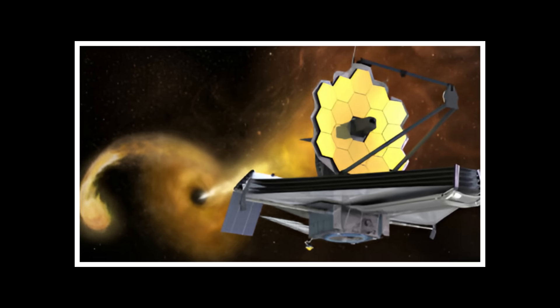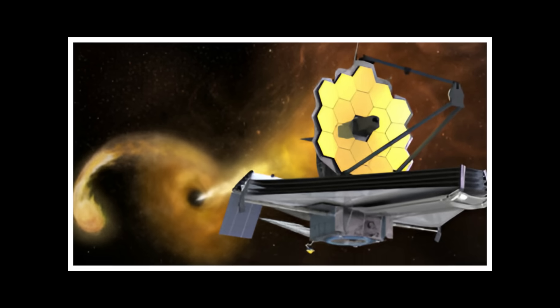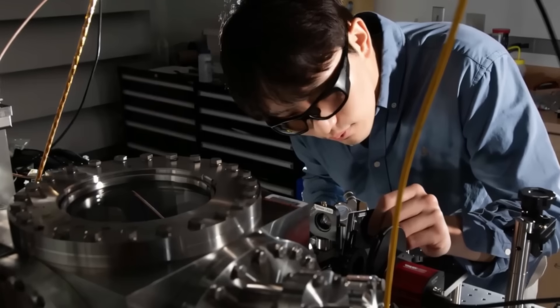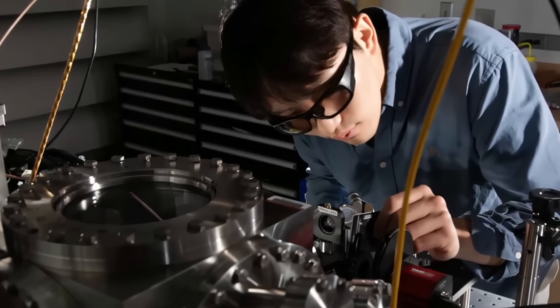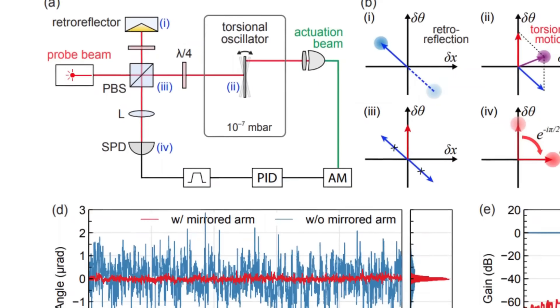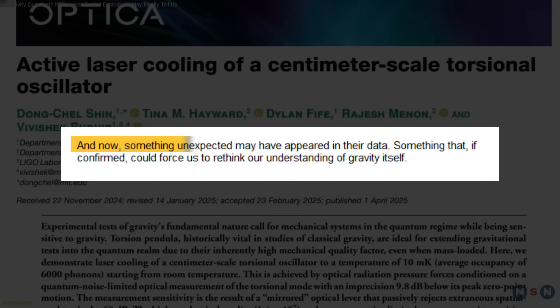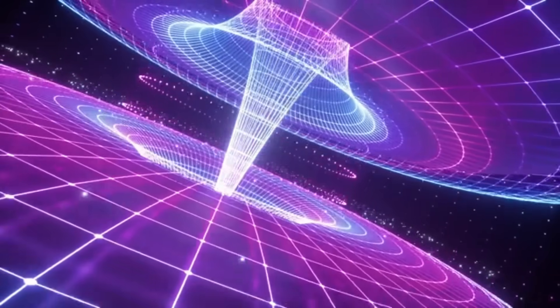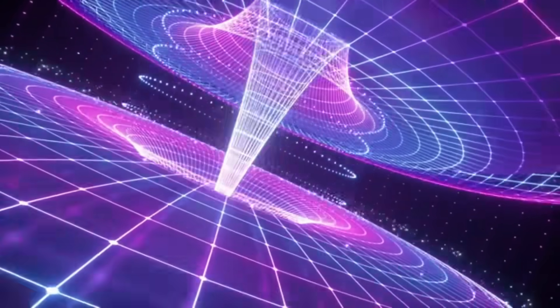MIT researchers have been developing revolutionary quantum devices to probe gravity's deepest secrets. Using laser-cooled torsional pendulums and atom interferometry, they've pushed measurement precision to unprecedented levels. And now, something unexpected may have appeared in their data. Something that, if confirmed, could force us to rethink our understanding of gravity itself.